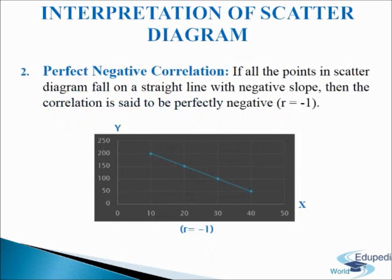Next, perfect negative correlation: if all the points plotted on a graph paper fall on a straight line with a negative slope, that is sloping downwards from left to right, then the correlation is said to be perfect negative correlation. The coefficient of correlation is r = −1. As you can see in the diagram, the slopes are facing downwards from left to right, so this is a perfect negative correlation.